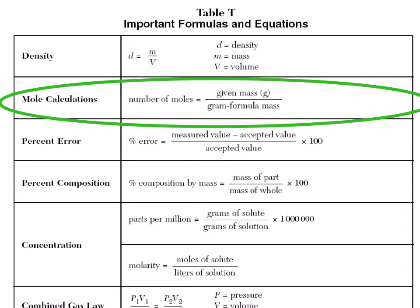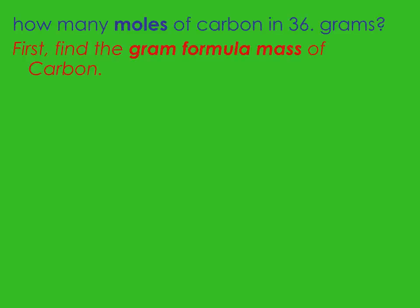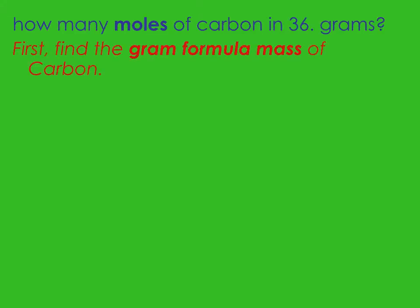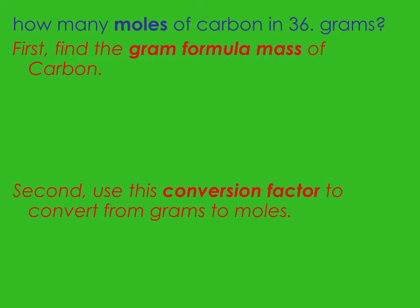For example, if you have 45 grams of carbon dioxide, you divide by 44, which is the gram formula mass. You find the atomic mass of carbon on the periodic table — we know that's 12 — and then you use the conversion factor to convert.